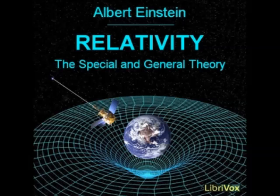In this case, relations hold in the four-dimensional continuum which are analogous to those holding in our three-dimensional measurements. However, the Gauss treatment for ds squared which we have given above is not always possible. It is only possible when sufficiently small regions of the continuum under consideration may be regarded as Euclidean continua. For example, this obviously holds in the case of the marble slab of the table and local variation of the temperature. The temperature is practically constant for a small part of the slab and thus the geometrical behavior of the rods is almost as it ought to be according to the rules of Euclidean geometry.